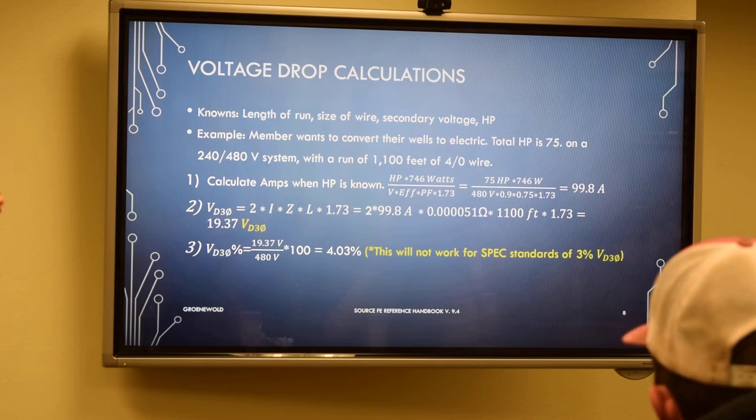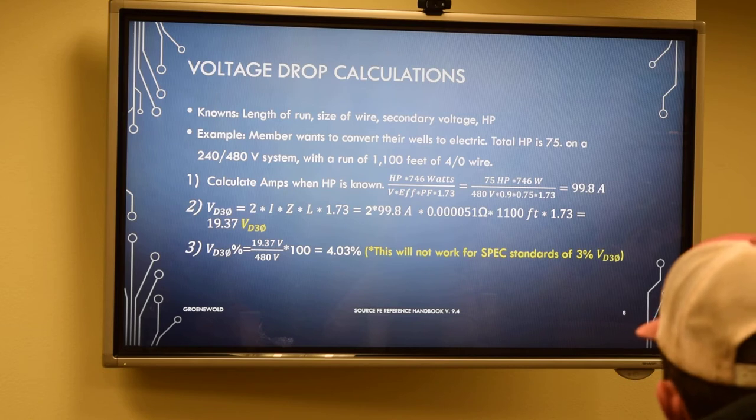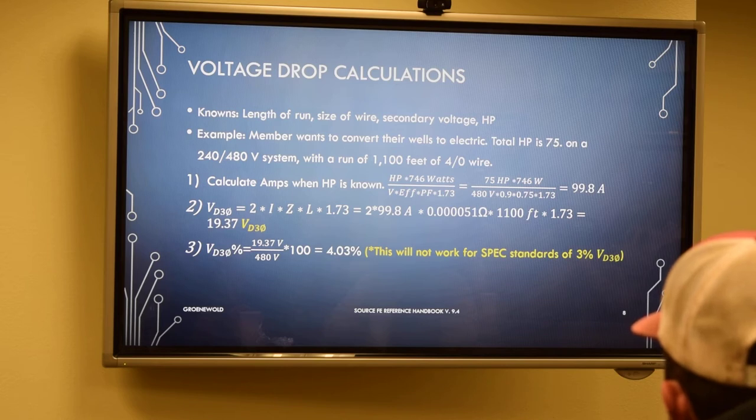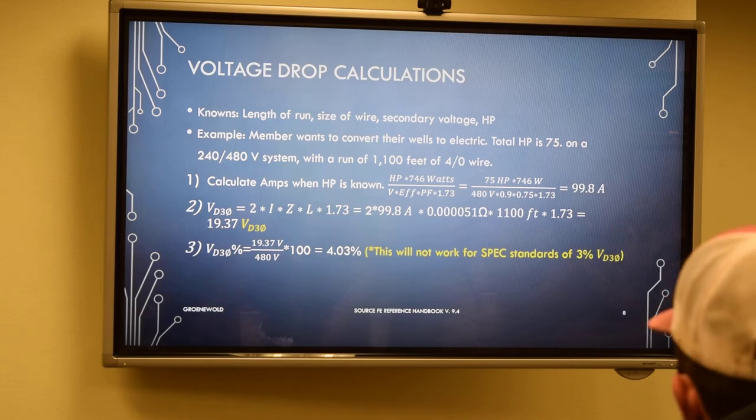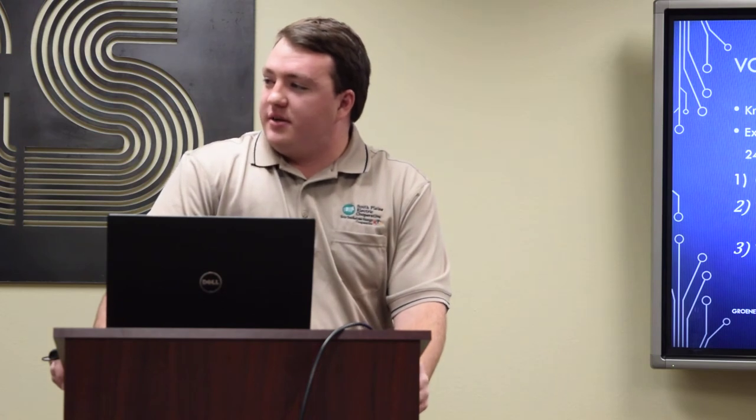Step two is where you start going into your voltage drop. Two times your current, times your impedance of the wire, times the length of the run, times that square root three, the 1.73. Any time, for example, the 4.0 wire, that is a known impedance and you can look that up. That's where that number 0.00051 ohms comes from. Once you plug into that equation right there, you'll get a voltage drop of 19.37 volts off of the 480. And to get it to the percentage, just divide that 19.37, divide by the 480, and then multiply by 100 to get into your percentage, where you get the 4.03%.